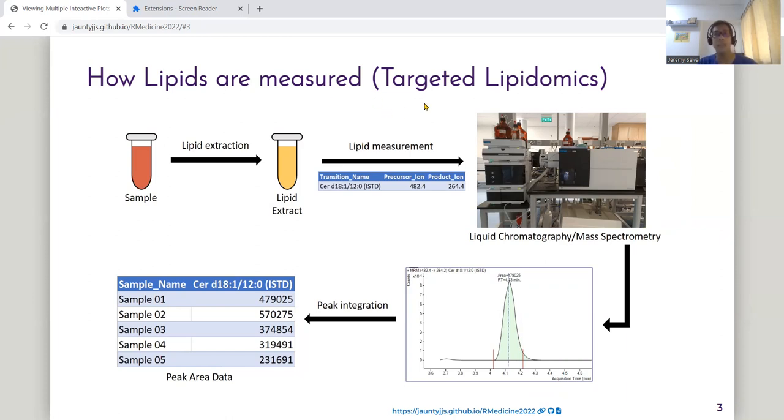Next, we create a list of transitions to tell the machine, the mass spectrometer, what kind of lipids to measure. The machine measures the lipids in the form of peaks given in the range of acquisition time. We integrate the area under the peaks and this is what we have.